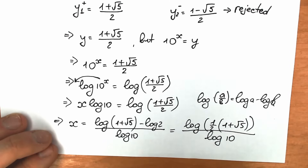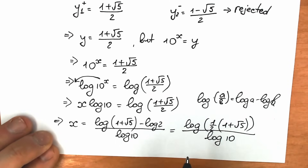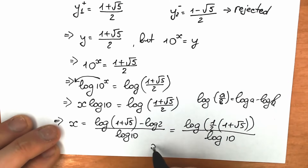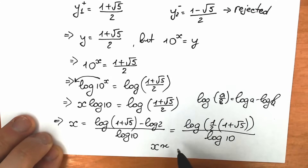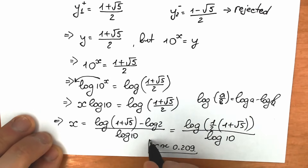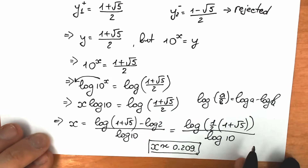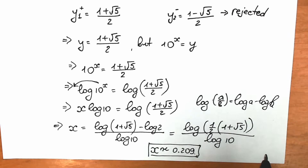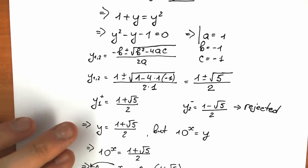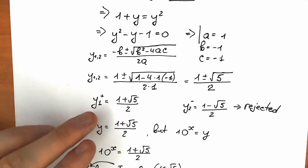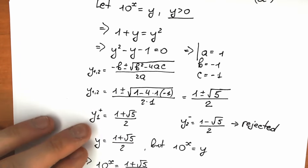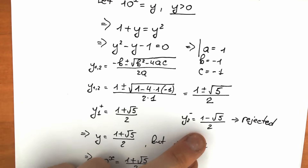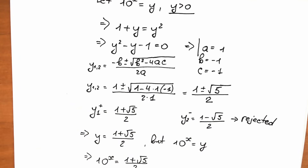Both forms are correct. If you're interested in the approximate answer, x is approximately equal to 0.209. Now I'm going to show you a second approach in terms of complex numbers — how we can find the complex solution using the rejected y₂.